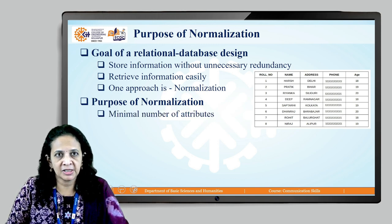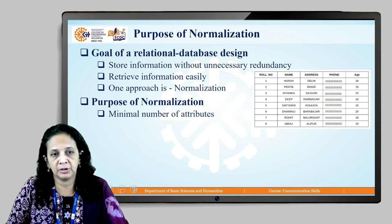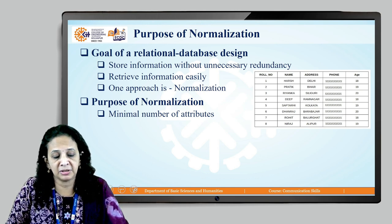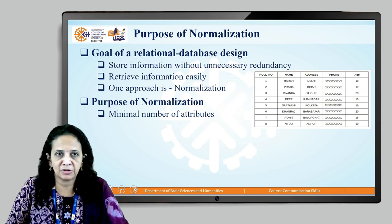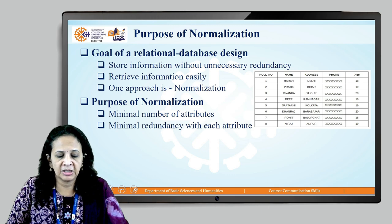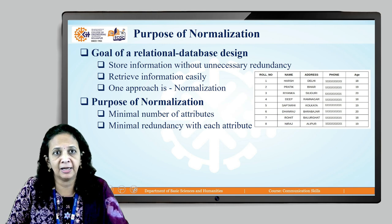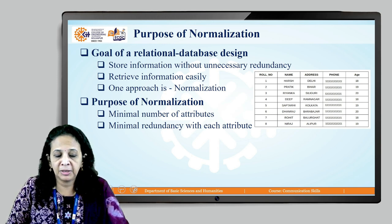The first purpose of normalization is a minimal number of attributes. For example, in a university database, for a student table, we store roll number, name, address, phone number, age, and marks — but relatives' names like mother and father are not required. Try to minimize the number of attributes. The second purpose is minimal redundancy with each attribute — if address is stored in the student table, it is not necessary to store it in another table as well.